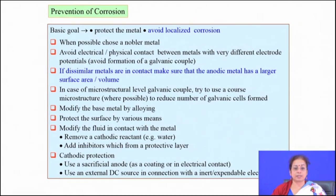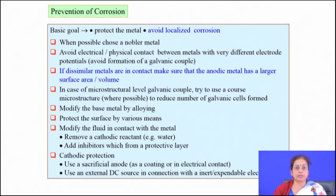Whenever possible, choose noble materials or materials on which a stable passive film forms to protect the underlying substrate — these are typical thumb rules for minimizing corrosion kinetics. Avoid electrical or physical contact between dissimilar metals to get rid of galvanic corrosion. If dissimilar metals are in contact, make sure the anodic metal has a larger area-to-volume ratio — that is a typical design criterion.